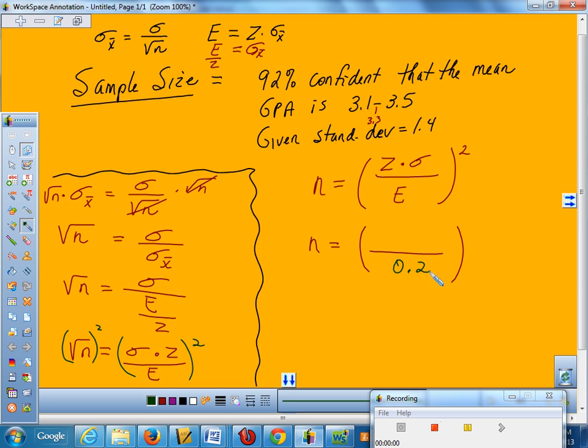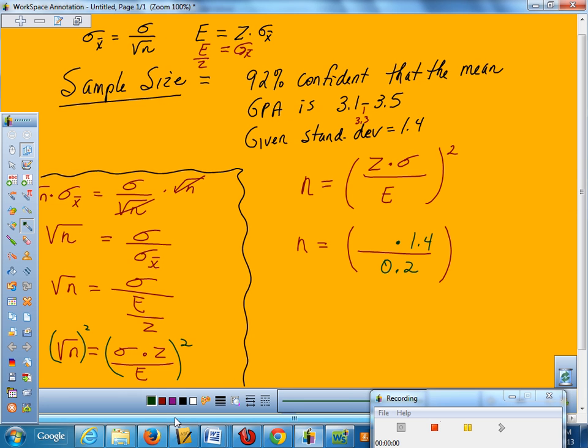They also gave me standard deviation, so I can fill in σ as 1.4. The only thing I'm missing is the z-score. Well, if it's got a z-score, it's got to have something to do with the normal curve.